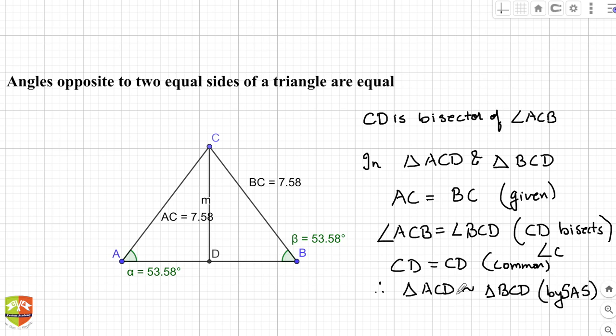Therefore you can always say angle A is equal to angle B, and this is nothing but corresponding parts of congruent triangles. Hence proved. We proved that angles opposite to two equal sides of the triangle are always equal.